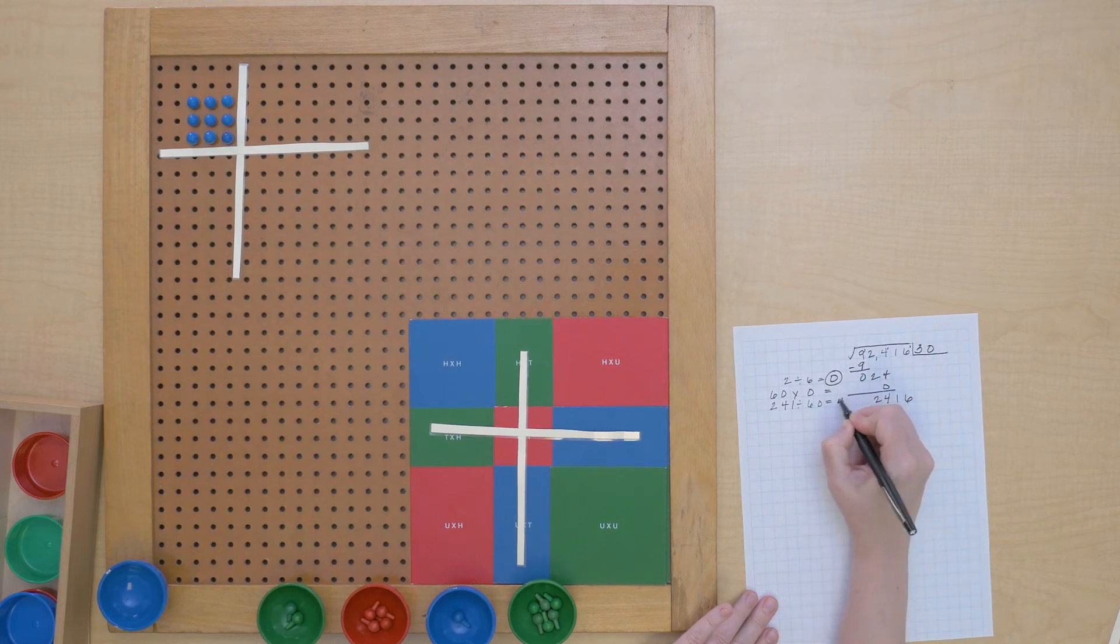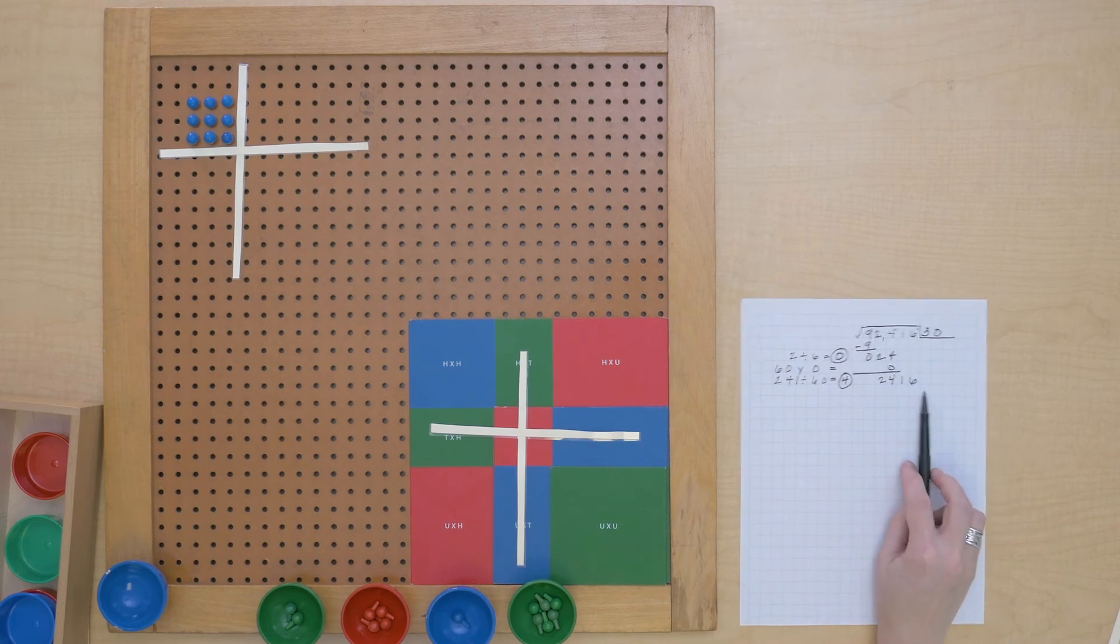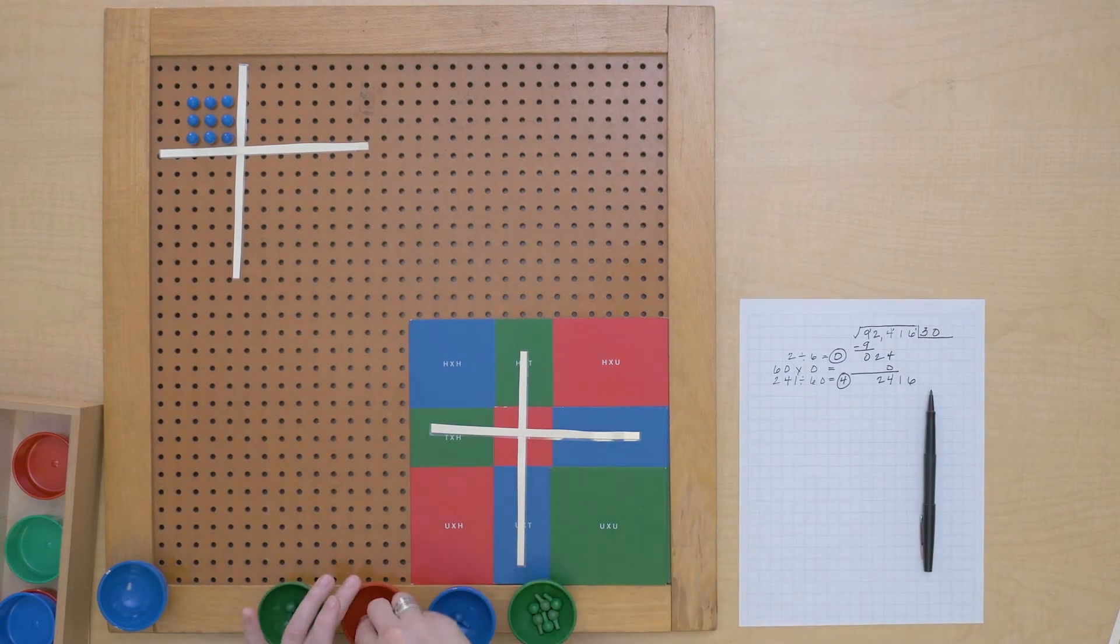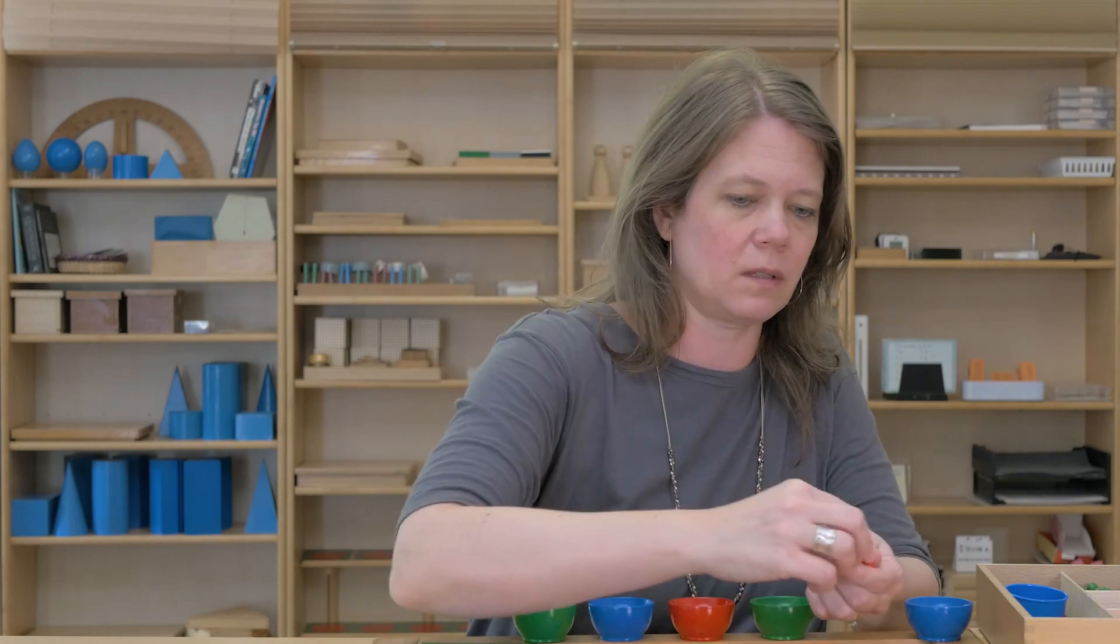So we should get our next trial root is four. Let's see if that works. I can see I'm building out these hundred rectangles.